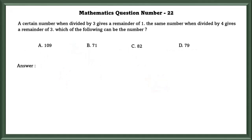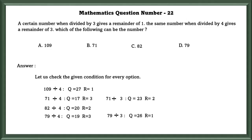Mathematics question number 22. A certain number when divided by 3 gives a remainder of 1. The same number when divided by 4 gives a remainder of 3. Which of the following can be the number? Going option by option, we can see that 79 is the only number which satisfies this rule.